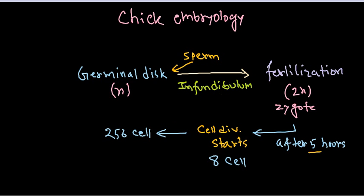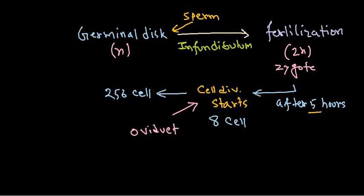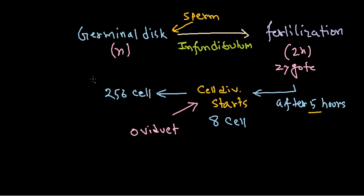Remember, this cell division is going on inside the oviduct, and this whole process occurs over about a day's duration. The zygote is migrating and maturing throughout this time inside the oviduct.